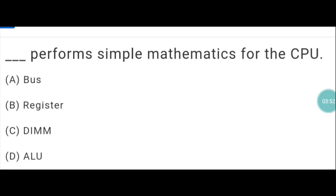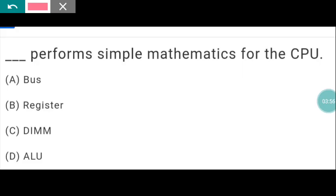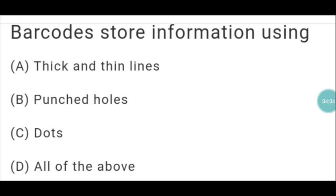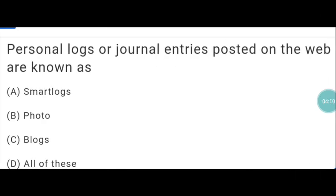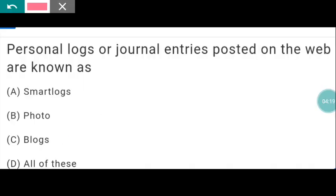This performs simple mathematics for the CPU — the answer is ALU. Barcodes store information using thick and thin lines. Personal logs or journal entries posted on the web are known as — the answer is C — Blogs.